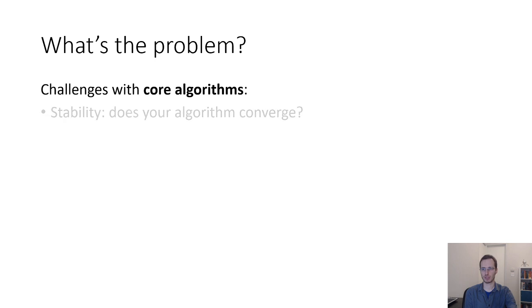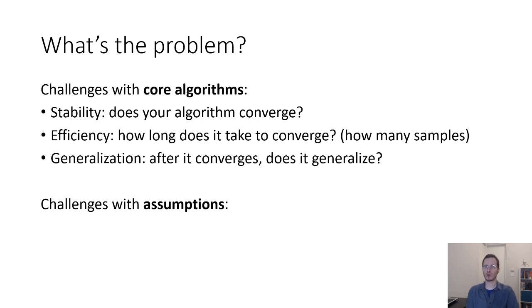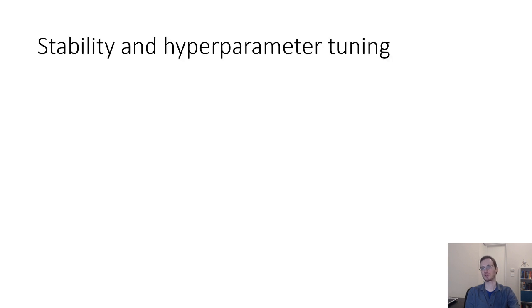So the challenges with core algorithms look something like this: Stability. Does your algorithm actually converge? And related to this is the question, can you make any guarantees about what your algorithm is going to do? Efficiency. How long does your algorithm take to converge? How many samples does it require? How much compute does it require? And generalization. After your algorithm has converged, does the resulting policy, model, or value function generalize effectively? But there are also some challenges with the core assumptions of reinforcement learning methods that perhaps we may need to think about carefully if we are to be able to apply reinforcement learning to real-world settings.